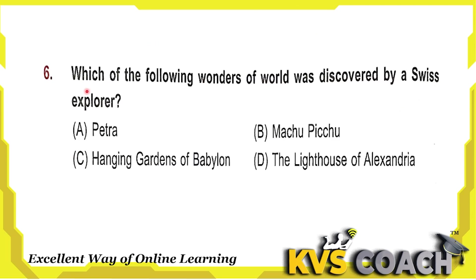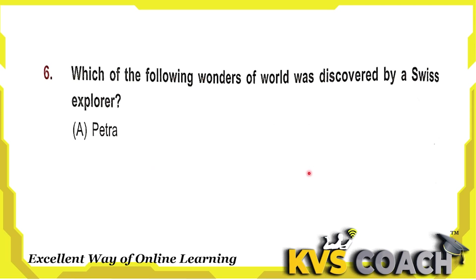Question 6: which of the following wonders of the world was discovered by a Swiss explorer? Option A is Petra — this was discovered by a Swiss explorer. Option B is Machu Picchu — discovered by an American explorer. Option C is the Hanging Gardens of Babylon — there is no definitive archaeologist who discovered this. Option D is the Lighthouse of Alexandria — discovered by a French archaeologist. So the right answer is option A, Petra.